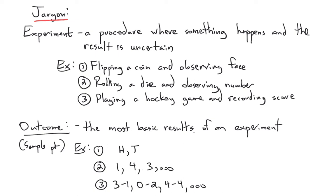And hockey game scores. Well, maybe the away team won 3-1. Or maybe the home team won 2-0. Usually it's away on the left, home on the right. Or maybe the team's tied with four goals apiece. Or whatever. They're examples of outcomes. Just the most basic results of an experiment.